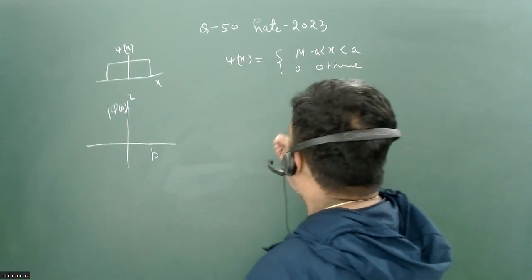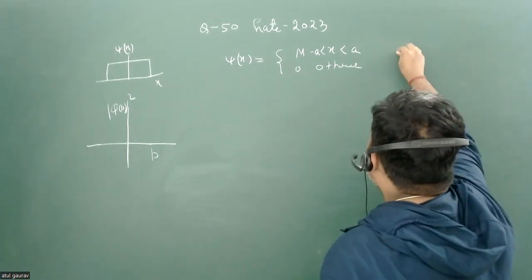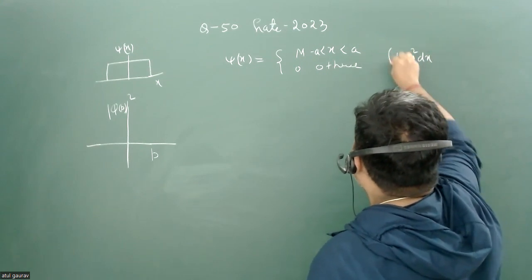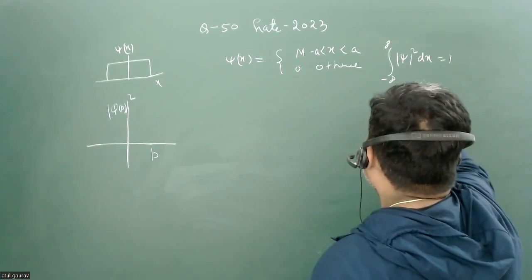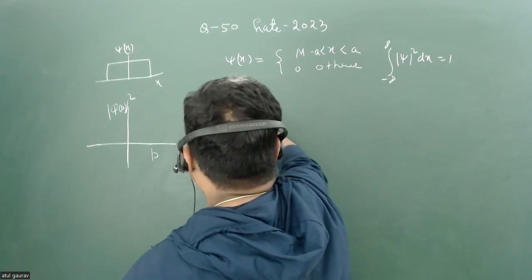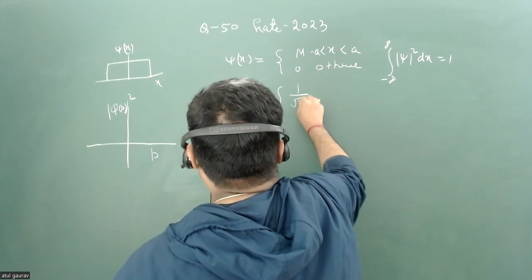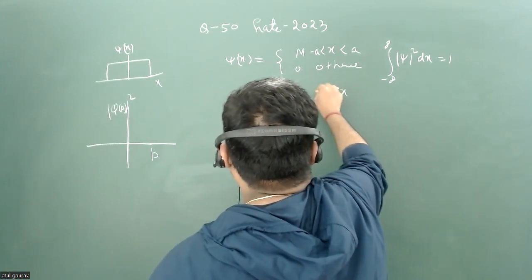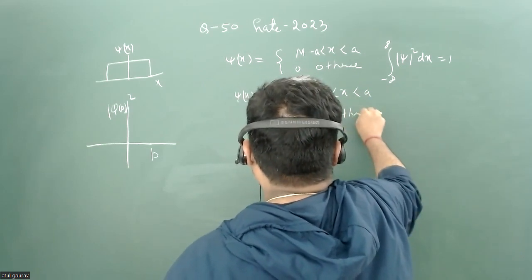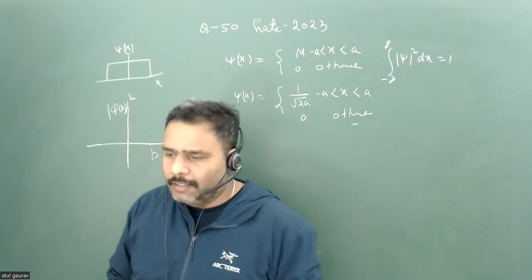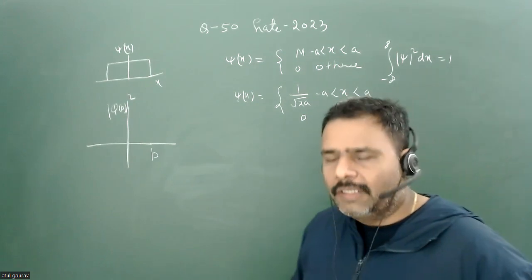Before doing the Fourier transform, we normalize this function. Normalization gives us: the integral from minus infinity to plus infinity equals one. So our normalized ψ(x) is equal to 1/√(2a) when x is between minus a to a, and zero otherwise. We deliberately normalize our function to avoid silly errors.